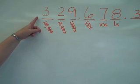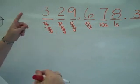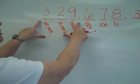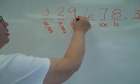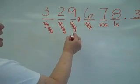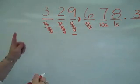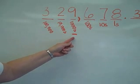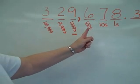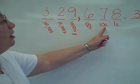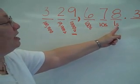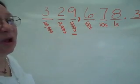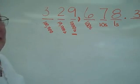So this number I'm going to group into 3's. This is the first 3. This is where I use the name thousands — 329,000's. And then 678 and 3 tenths, but I'm not looking at that right now.